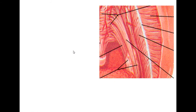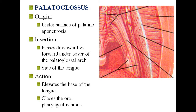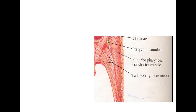Palatoglossus: it arises from the undersurface of the palatine aponeurosis. It passes downwards and forwards under cover of the palatoglossal arch, by the side of the tongue, and is inserted into the tongue. Its action is to elevate the base of the tongue and close the oropharyngeal isthmus.